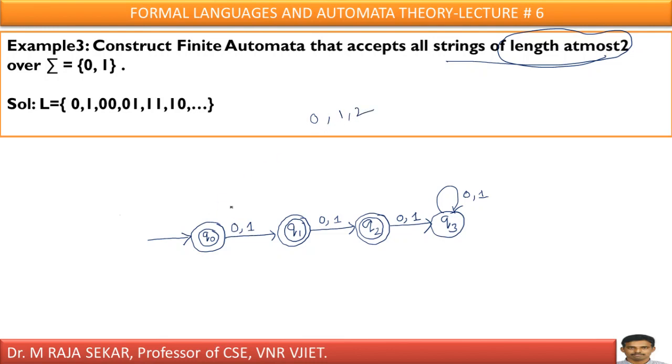0 length string means, just if I keep 0, it must accept. Even 0 length string means, I can say, just epsilon. Without keeping any input also, it must accept. Therefore, I am keeping q0 as initial as well as final state.